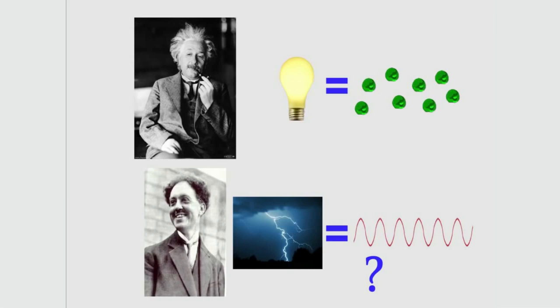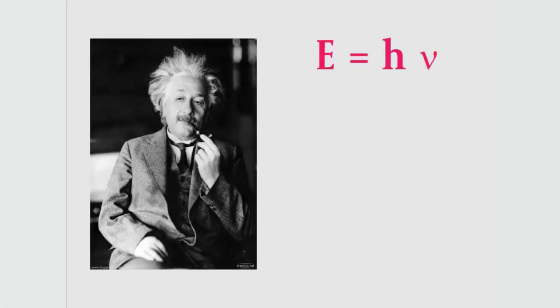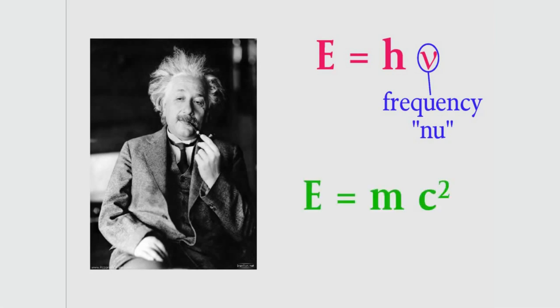To find out, he combined two of Einstein's simplest but most important discoveries. Here's the first one. As I mentioned in an earlier video, Einstein said that the energy of a photon of light is equal to h times nu, where the Greek letter nu is the frequency of the light. The second of Einstein's ideas that Louis de Broglie used was his most famous equation, E equals mc squared. That's energy equals mass times the speed of light squared, where c is the speed of light.